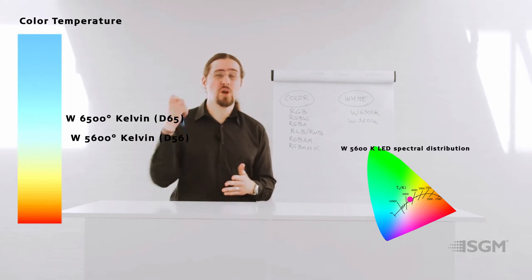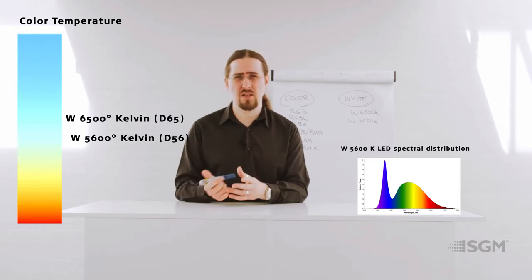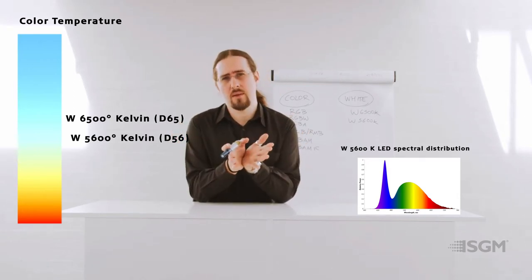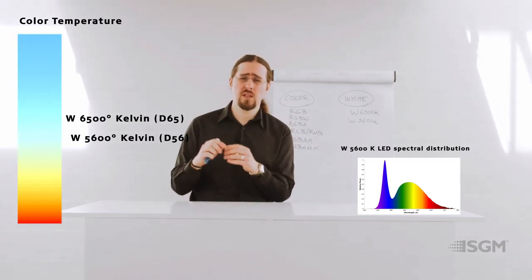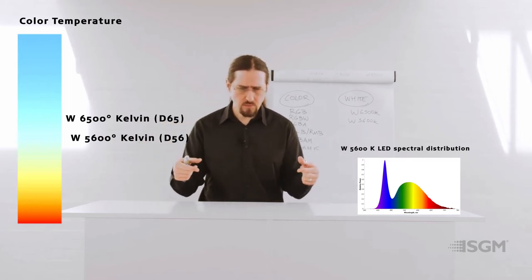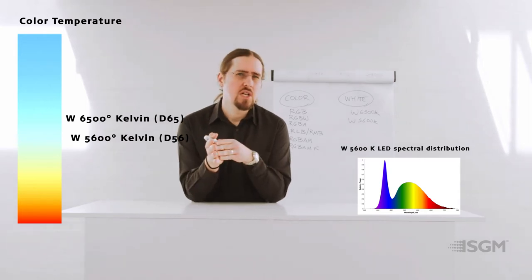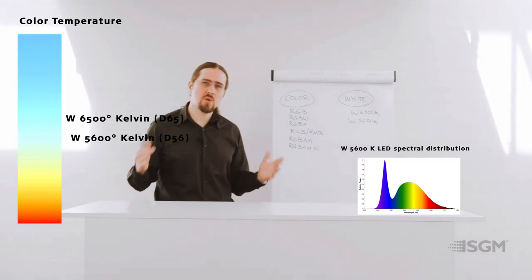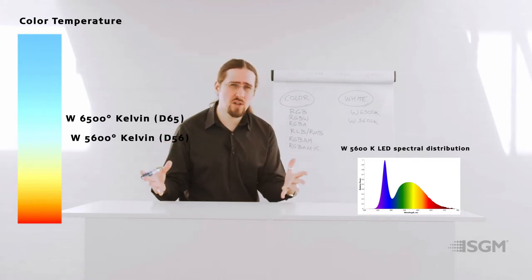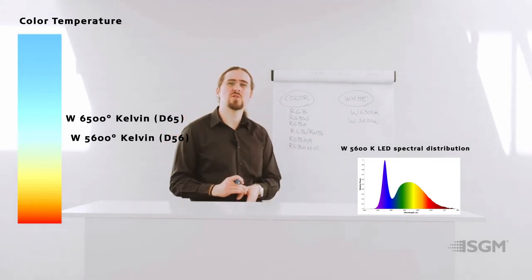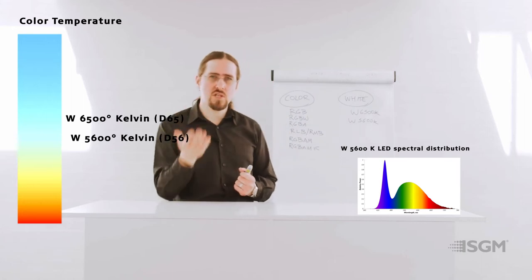5600K is more a broadcast standard or a film standard. Normally when you're working with cameras, you will see that the white balance there is always a preset for 5600K. Doesn't matter if it's a video camera or a film camera, because even the film - the old Kodak films and so on - they were balanced for that color temperature too. So this is a standard that is widely used in the broadcast world. If you're looking for that kind of luminaire, this LED might be more interesting for you because the colors in camera will look similar to what you see in the eye.